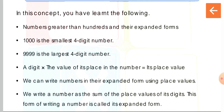For a bigger four-digit number, let's take 4375. You can expand this number as 4000 + 300 + 70 + 5. This is the way to expand this number — we write a number as the sum of the place values of its digits. This form of writing a number is called its expanded form.